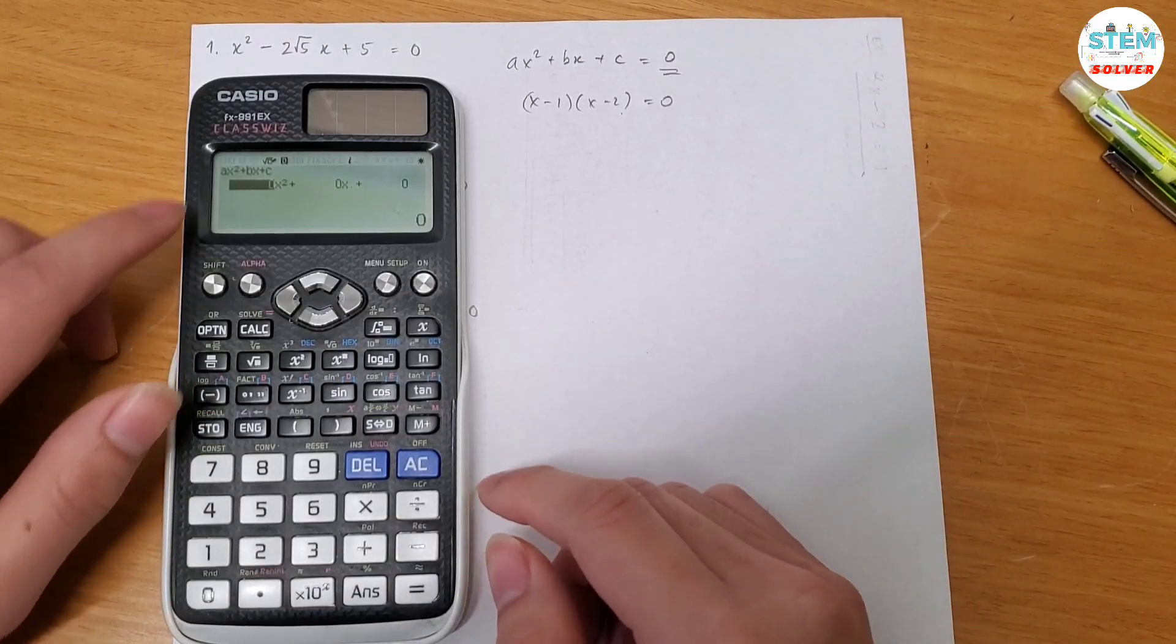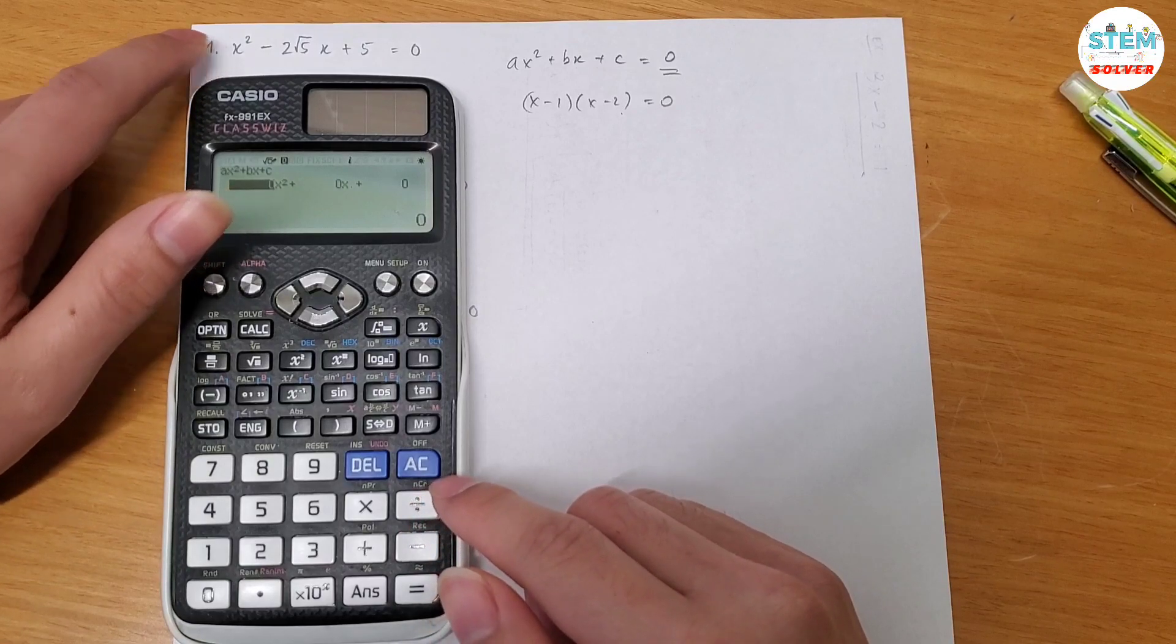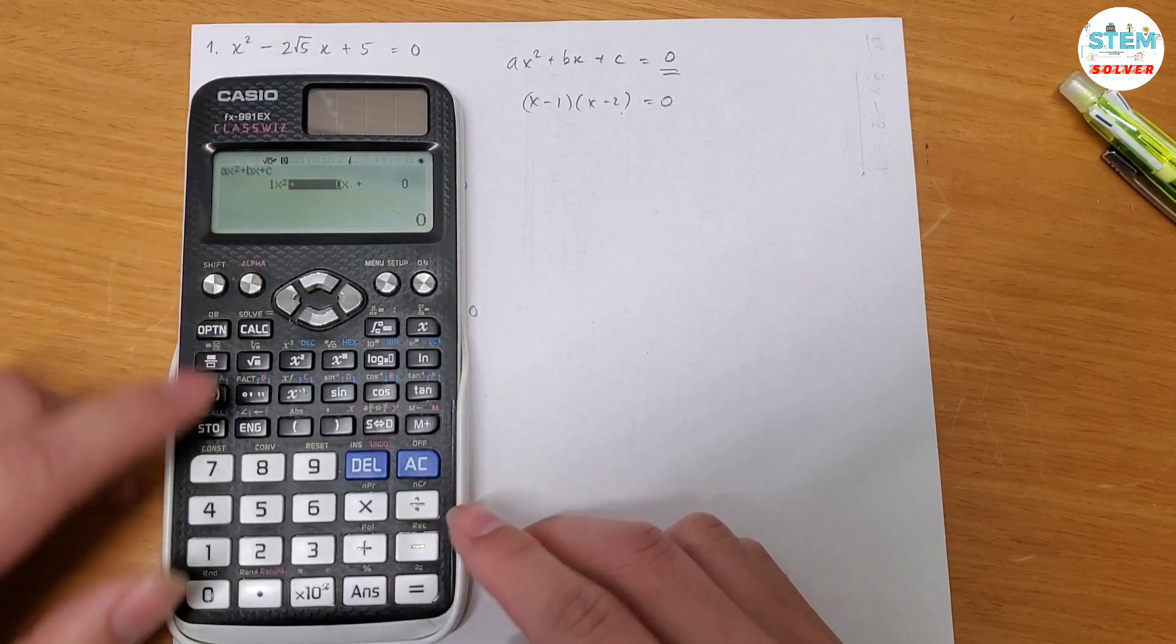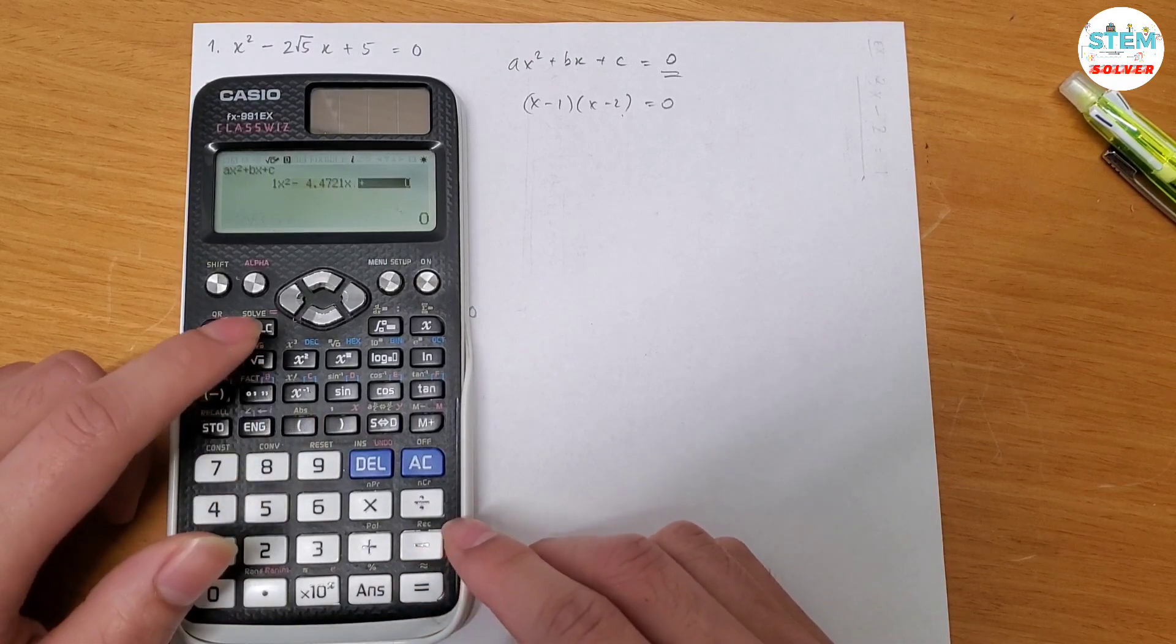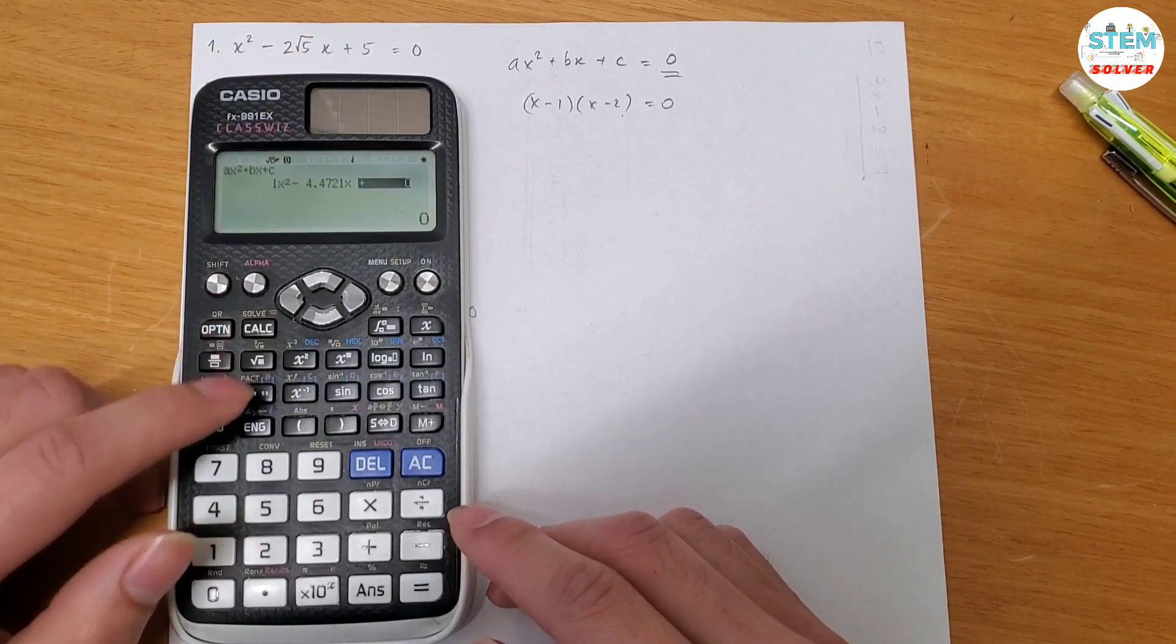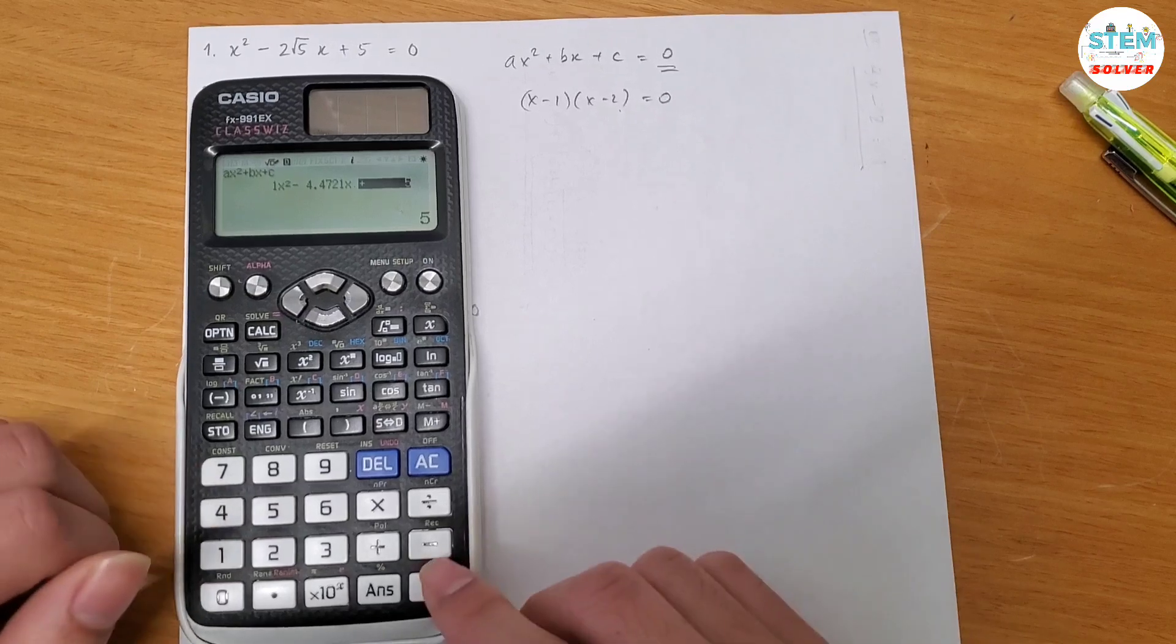Now let's plug in the number. So coefficient of x² is 1, coefficient of x is -2√5, okay? And then coefficient of x⁰ is 5, alright? Now hit the equal sign.